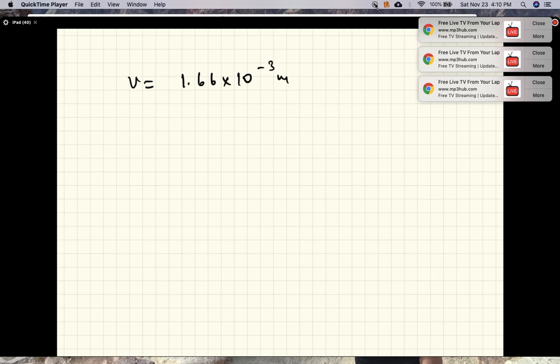The velocity works out to 1.66 times 10^-3 meters per second, and 10^-3 is millimeters, so 1.66 millimeters per second. That's the rate at which blood flows in your capillaries. It flows so slow because you need time for the blood to exchange nutrients with cells and for oxygen and carbon dioxide to be exchanged in the lungs.